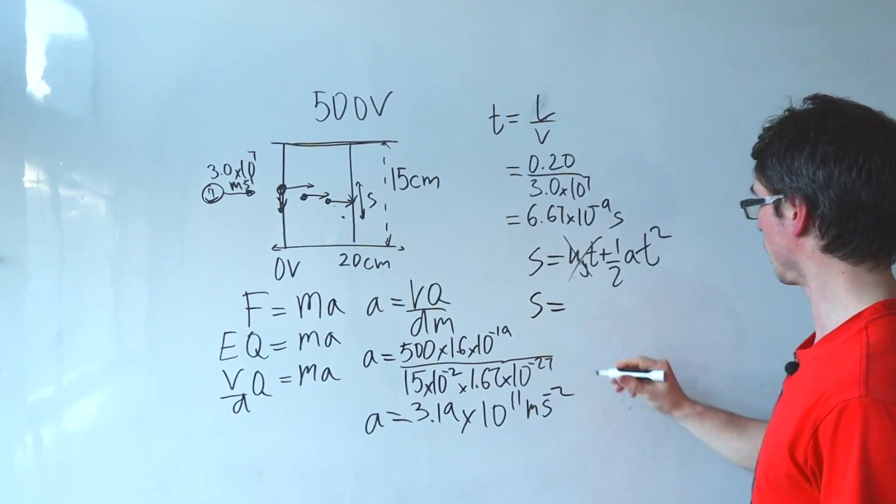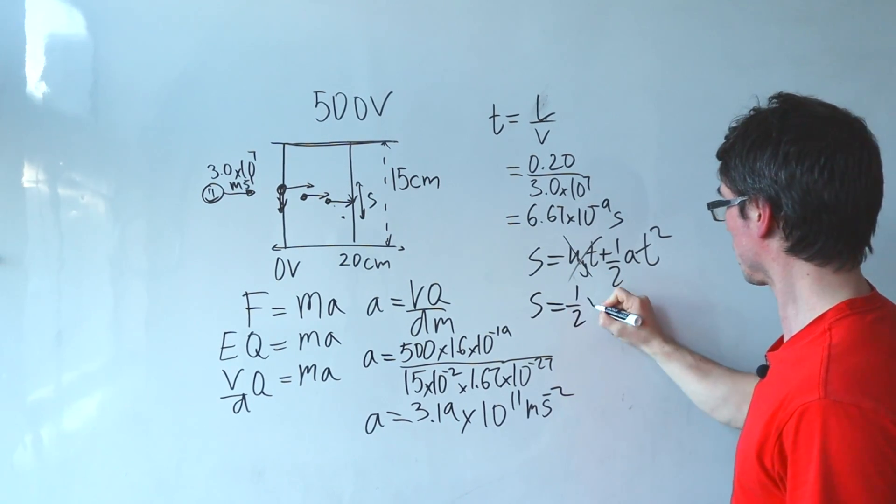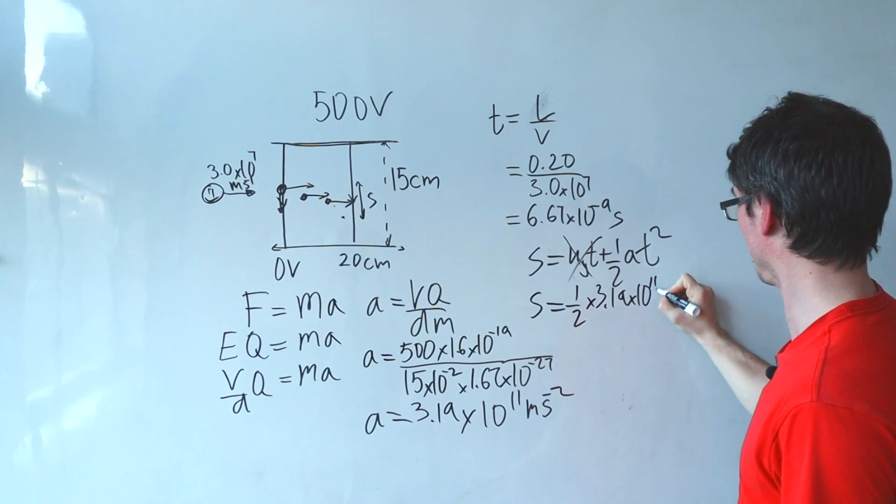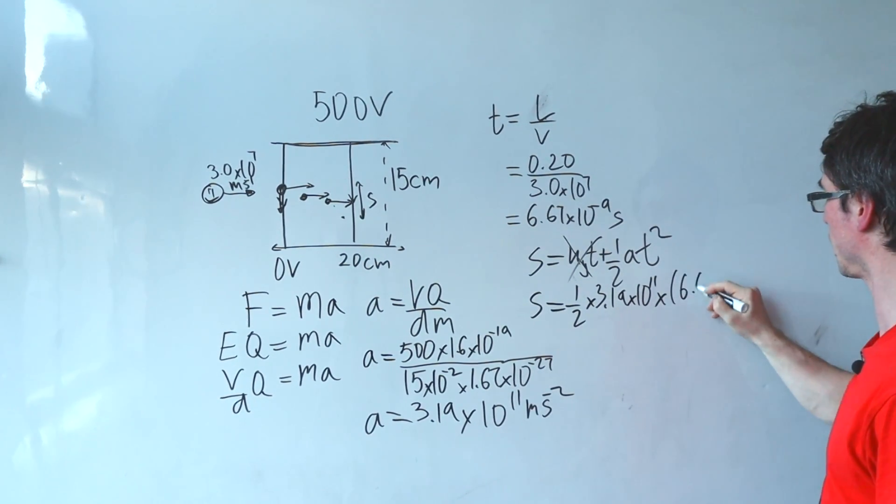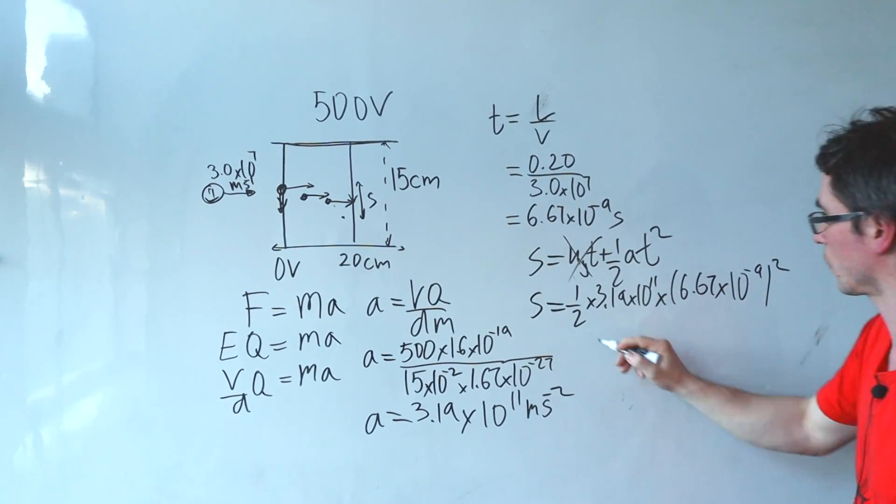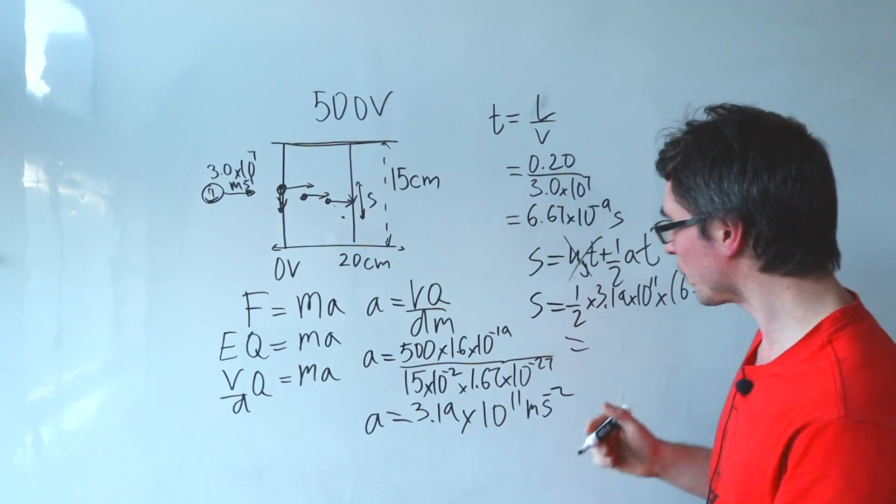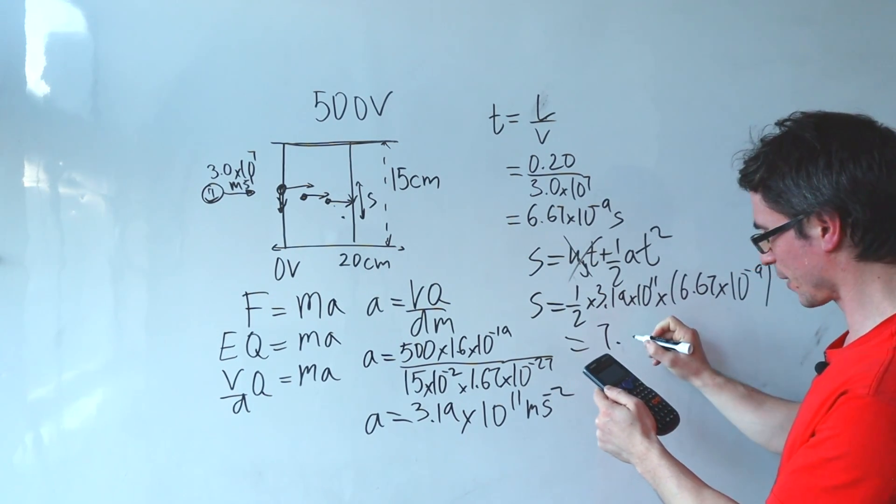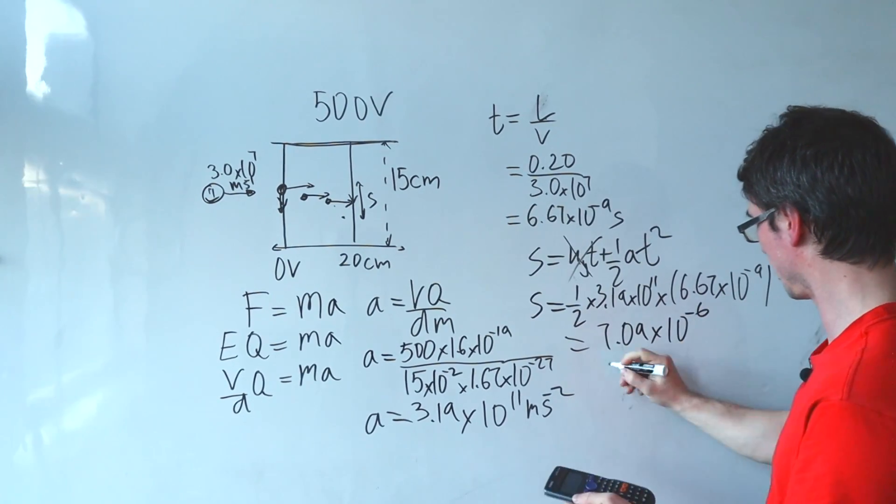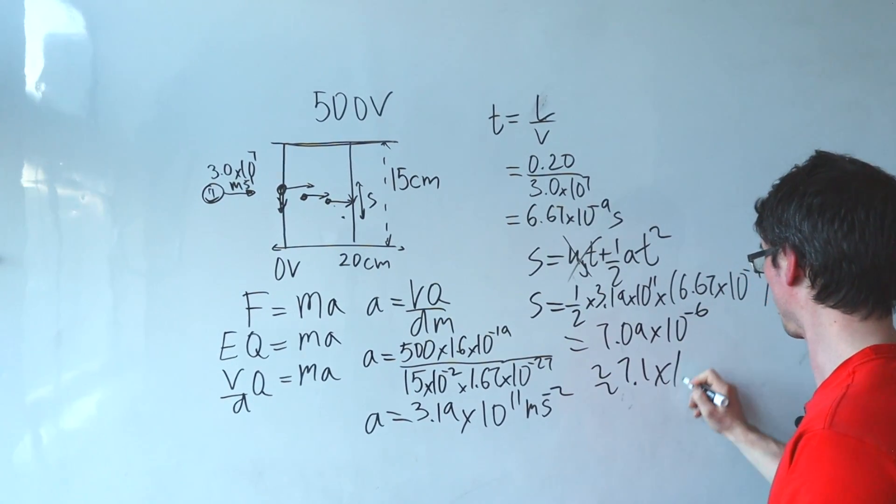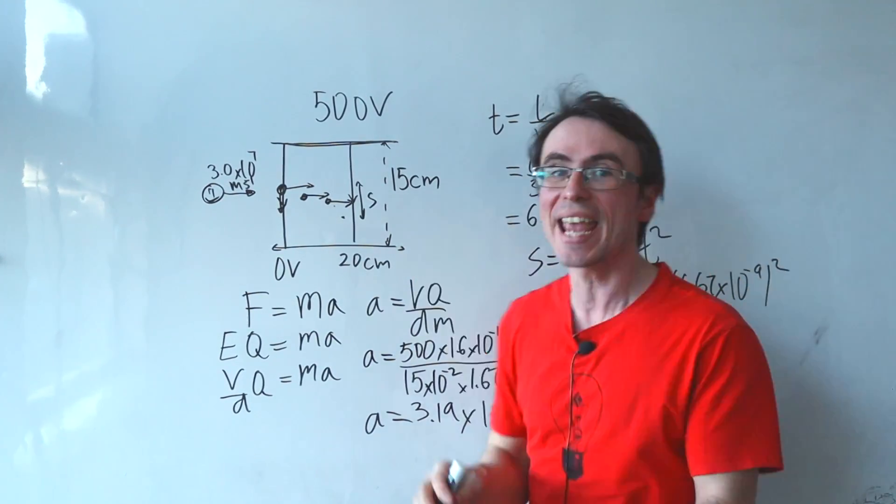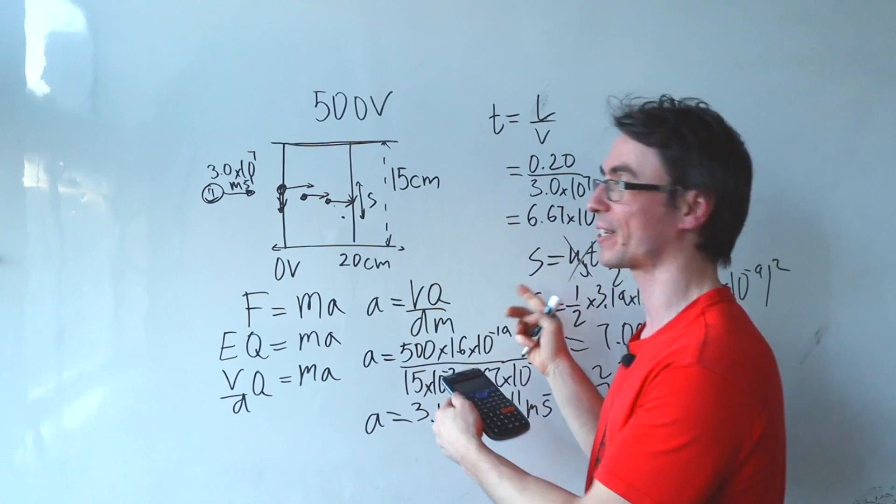So S will be equal to a half times the acceleration which is 3.19 times 10 to the power of 11 multiplied by the time squared, do not forget the square, 6.67 times 10 to the power of minus 9 squared and this here will just give me a tiny deflection. Let's see if I got that right, I've got around 709 times 10 to the power of minus 6, should just call it 7.1 times 10 to the power of minus 6 meters, so the answer is yes the proton will pass through.